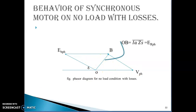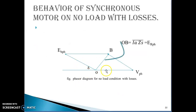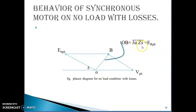From the equation Vph minus Ebph equals Ia·Zs, we draw the vector diagram. This is Vph, this is Ebph, and by the parallelogram law we take their vector addition. This phasor - the vector addition of Vph and Ebph - is nothing but Ia·Zs, denoted as OB. This Ia·Zs is called the resultant phasor, represented as Erph. So Erph is the resultant phasor, which is the product of armature current per phase and armature impedance per phase, as shown in the figure.